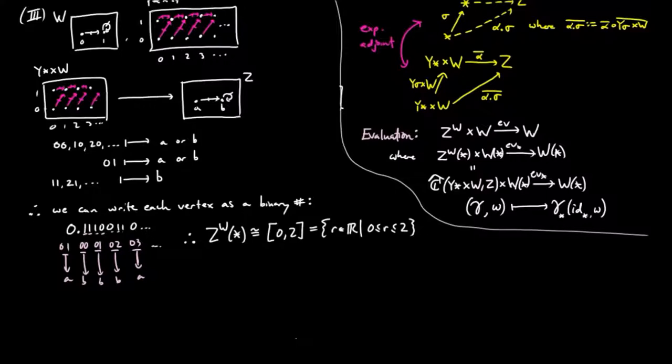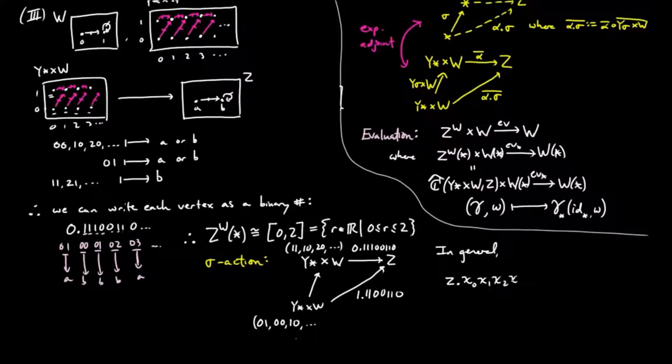Anyways, we will just be using this as a notational convenience. If we're given a Z to the W figure 0.111001100 with 0s repeating the rest of the way, by precomposition with the product of Y sigma and the identity on W, we see that the sequence 010010 and so on is taken to 1.1100110 repeating the rest of the way. In general, since (1,1) is always taken to B, we see that the number Z.x0x1 and so on dot sigma is 1.x1x2x3.